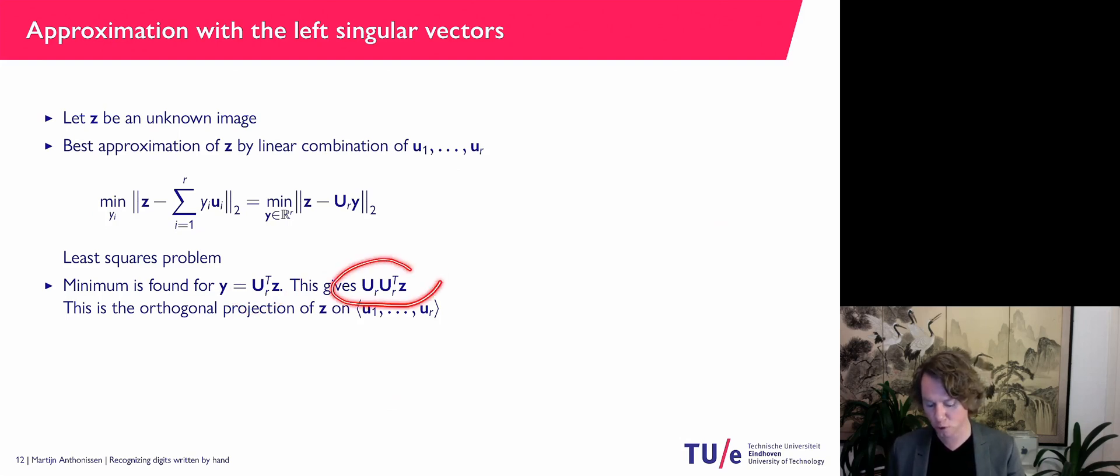That means that the best approximation image itself is U_r times U_r transpose Z. That's basically just this thing or this linear combination, if you like. Or written in a different way using matrix vector notation.